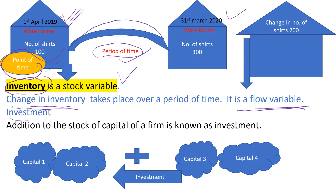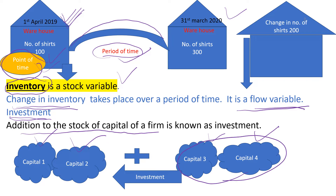What do we mean by investment? Investment is nothing but an addition to the stock of capital for a firm. Let us assume there is a firm which already has two machines or two capital goods. Now if it is going to buy a third and fourth machine, then these added machines we call investment.